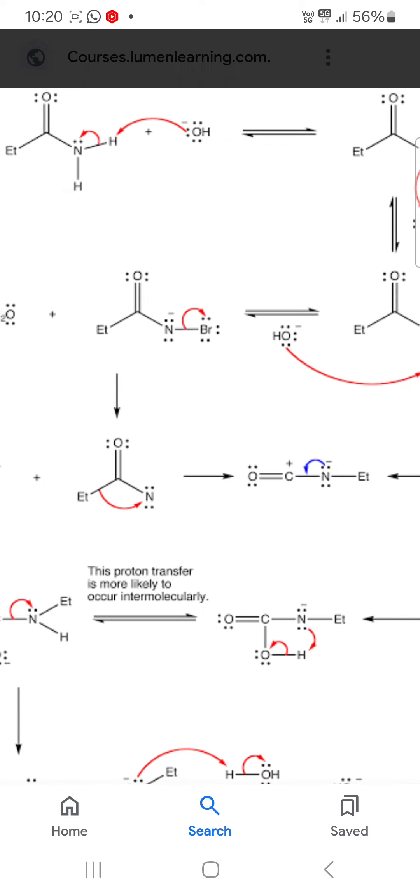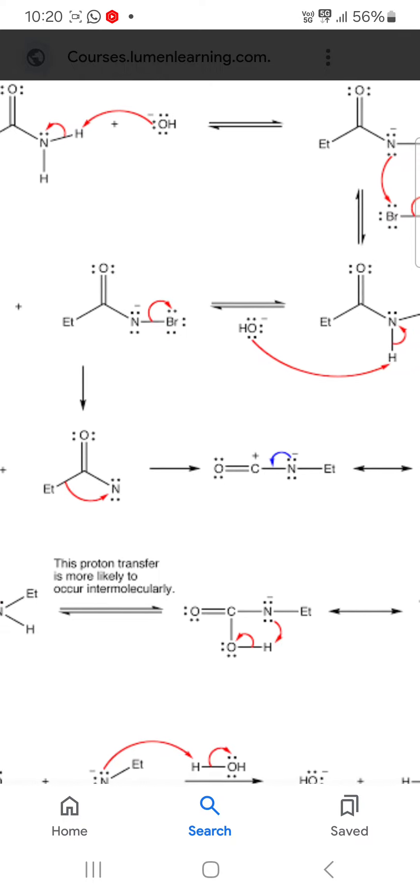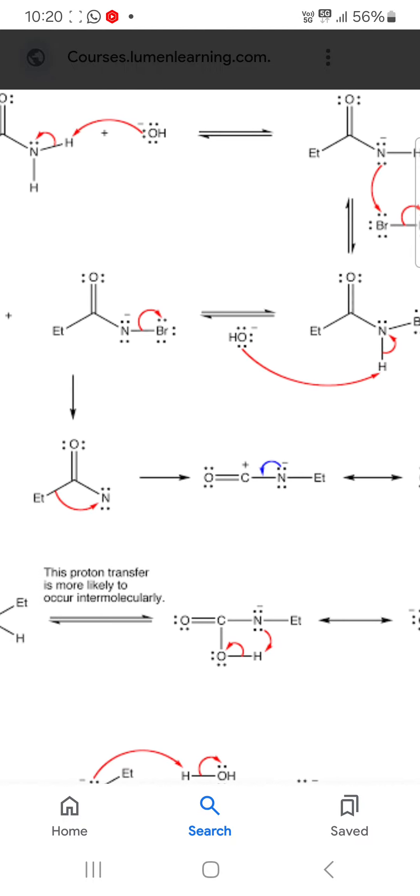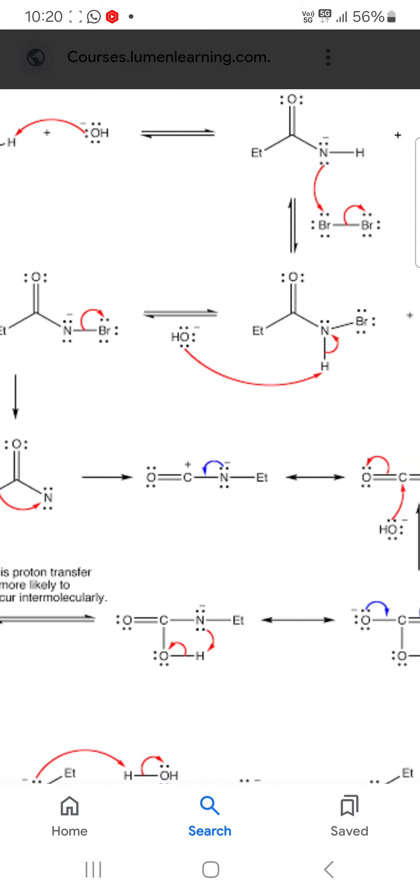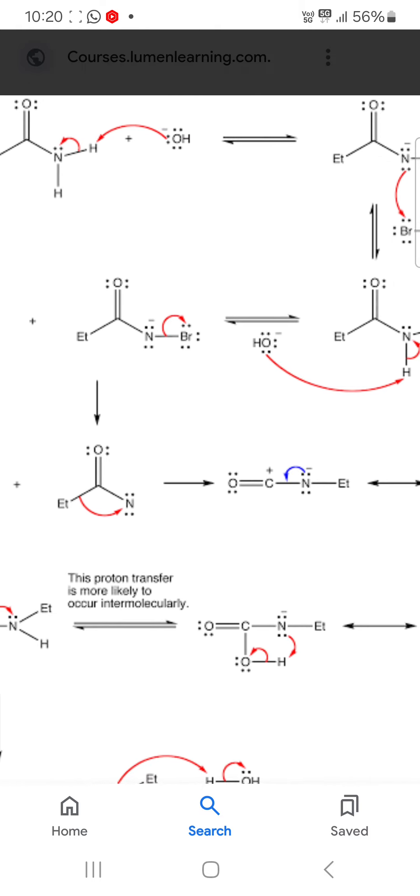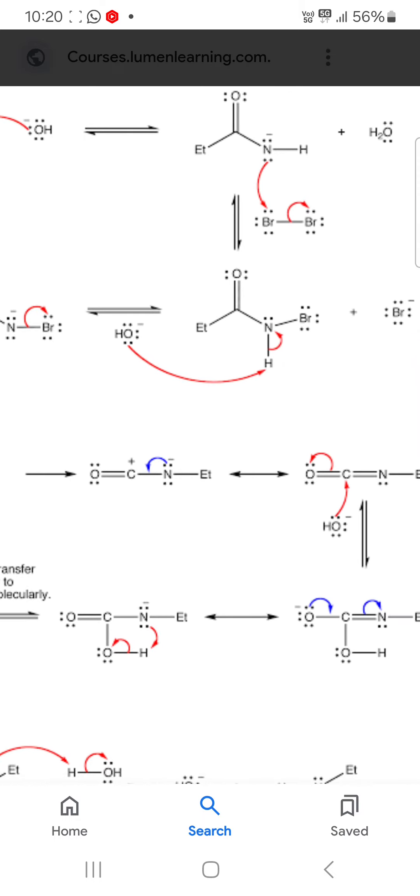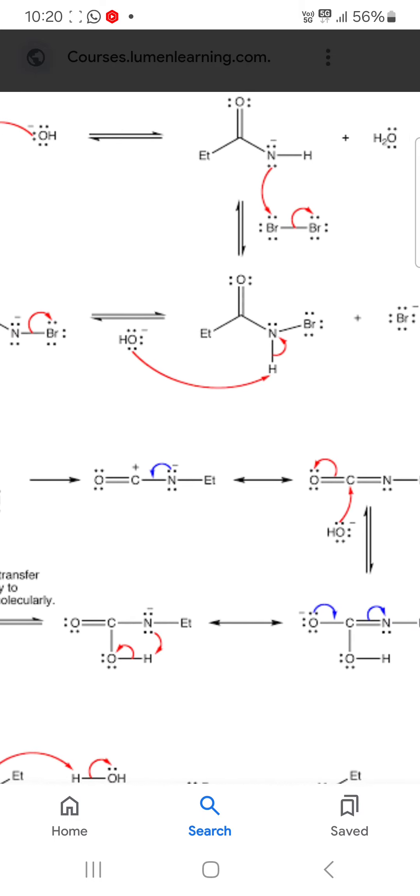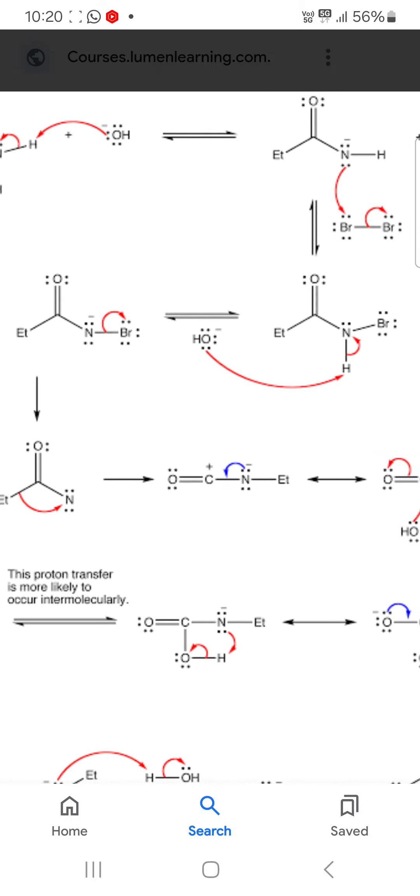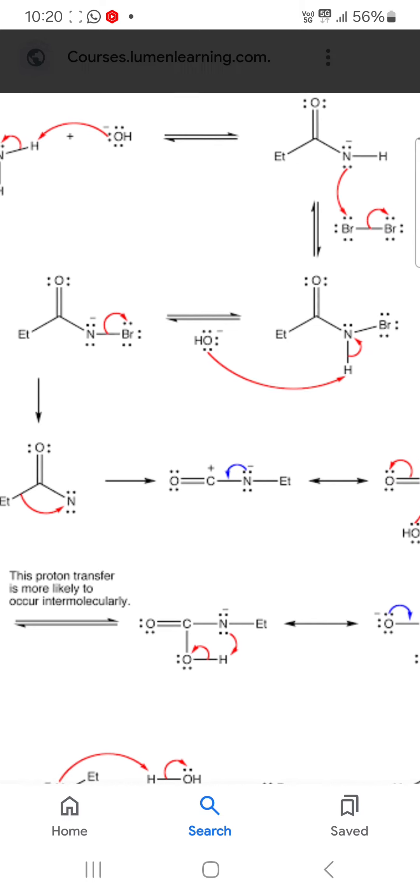Base OH- approaching hydrogen, then breaking of NH bond and formation of OH bond. So you can see in water, a new OH bond formed and the old NH bond breaks.